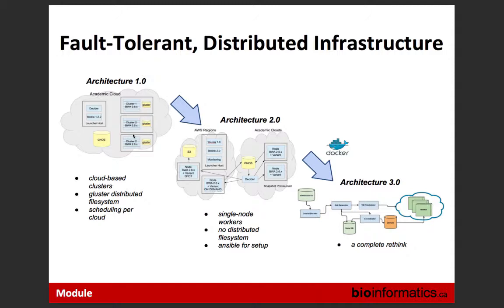Some of the academic clouds had issues — they were new environments, some nodes would disappear. But that can actually happen in commercial environments too. Commercial environments offer something called spot marketplace or preemptible instances, where you can use those instances at a tenth the cost. The caveat is your instances may disappear with anywhere from 10 to 30 seconds notice. But the benefit is you get to essentially stretch your money by a factor of typically about tenfold. For PCOG, which wasn't funded, this was a mechanism we could use to do work on Amazon very cheaply while stretching our dollar as far as it could go.